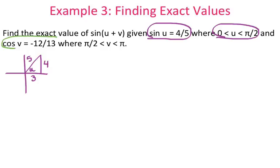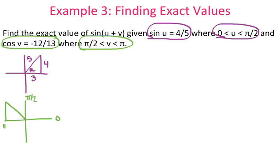My other triangle: cosine is negative 12 thirteenths, where v is between pi over 2 and pi. Pi over 2 to pi is the second quadrant — it goes 0, pi over 2, pi, 3 pi over 2, then 2 pi. For angle v, cosine is adjacent over hypotenuse, so that makes the adjacent side negative 12 and the hypotenuse 13. Using the Pythagorean theorem, the third side ends up equaling 5.